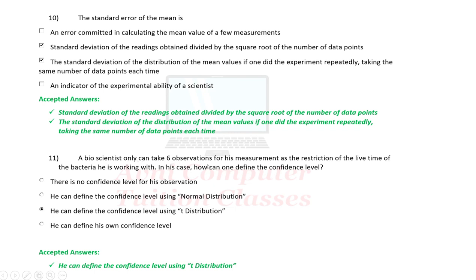Last question: a bio-scientist can only take six observations for his measurement due to the restricted lifetime of the bacteria he is working with. In his case, how can one define the confidence level? He can define the confidence level using the t-distribution. Thank you.